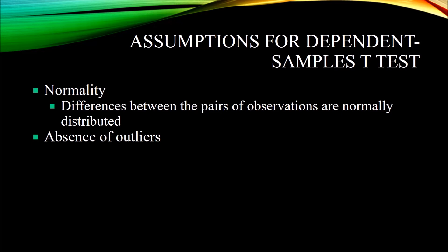Now let's take a look at the assumptions for a dependent samples t-test. There are only two assumptions here. The first is the assumption of normality, and this has to do with the differences between the pairs. The differences between the pairs of observations must be normally distributed. This normality assumption doesn't refer to each variable individually — it's not saying that all scores in the pre-test or post-test need to be normally distributed. Rather, if you take the pre-test and subtract the post-test, that new variable containing the differences between the pairs must be normally distributed.